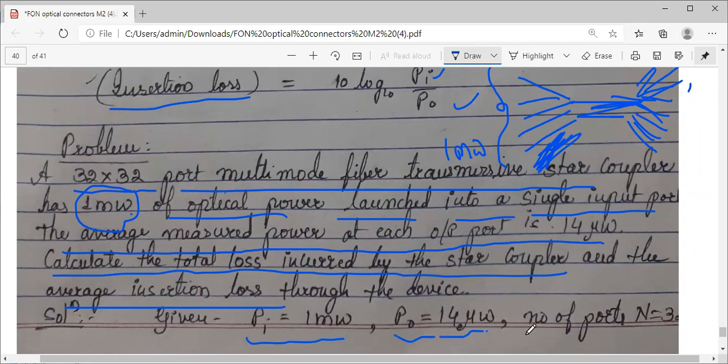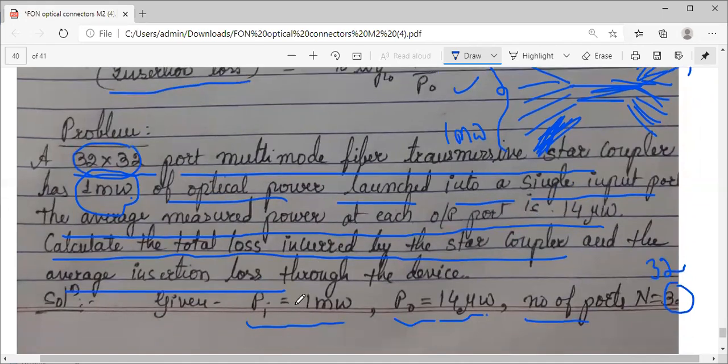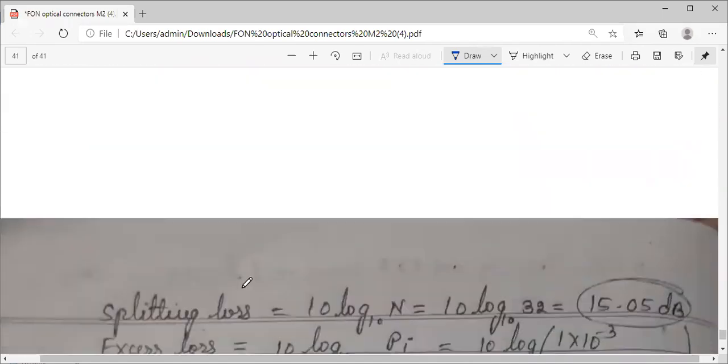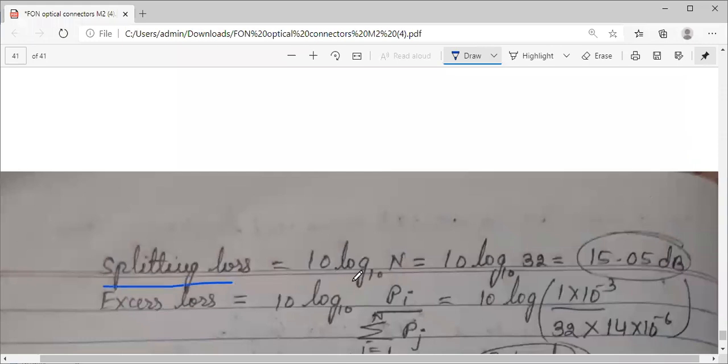Given: input power launched is one milliwatt, output 32 times 14 microwatts each. Number of ports: 32x32, N equals 32. Coming to the formula, first splitting loss is 10 log base 10 N. Use the formula, you get 15.05 dB.